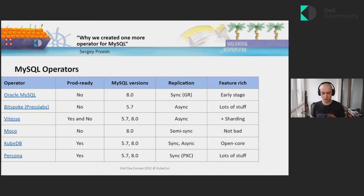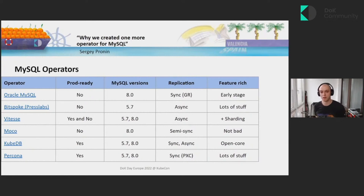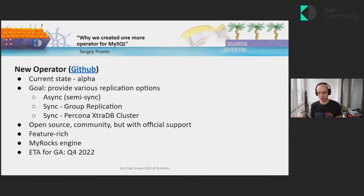The last one is Percona. Our current operator is based on Percona XtraDB Cluster. We support both 5.7 and 8.0, have customers using it in production, and have a huge community around it. It's feature-rich and completely open source. Looking at this table, we see there is still a gap specifically for production-ready, open source operators that have both asynchronous replication and group replication. Our goal for our new operator is to provide various replication options through an operator that is completely open source, has a huge community behind it, and has official support from a company.